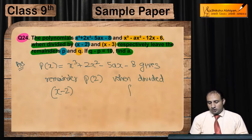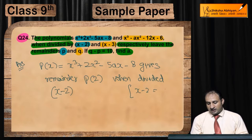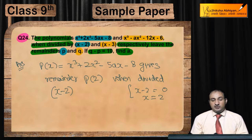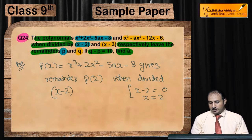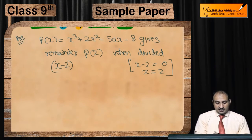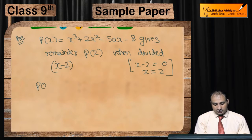Why does it give p(2)? Because when we set x - 2 equal to 0, we get x = 2. Substituting x = 2 into the polynomial p(x) gives us the remainder, by the Remainder Theorem.